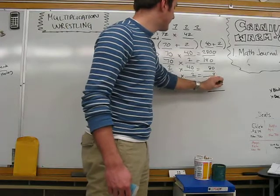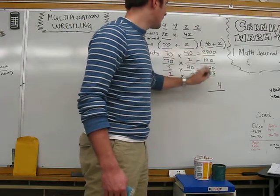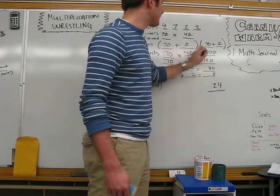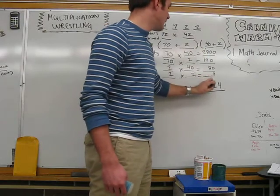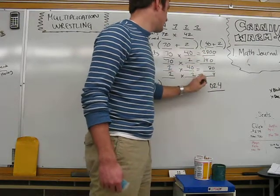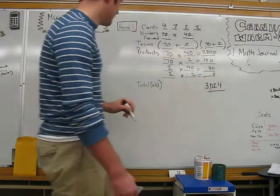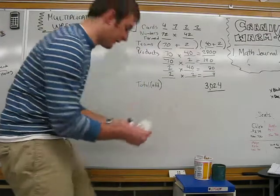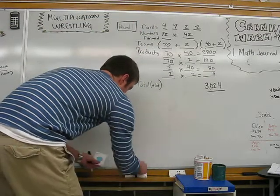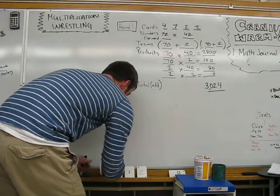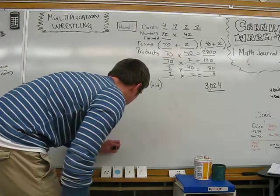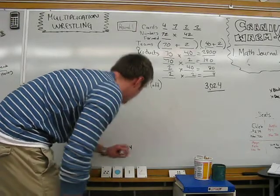Add them up: zero, zero, zero, four, zero, four, eight is twelve, one, eight, one is ten, two plus one is three. Now I'll just lay them out as a two, two, a seven, and a four. My product was three thousand twenty-four.